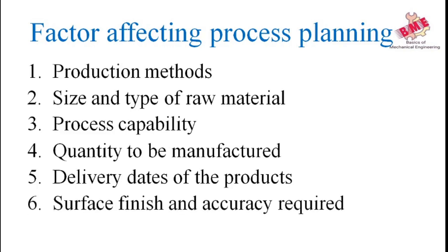The sixth factor is surface finish and accuracy required — the surface finish required varies with the type of tool, machine, and manufacturing process selected. For example, CNC machines give a better surface finish compared to manual lathe machines. We must select the proper machine for the surface finish required: if more surface finish is needed, a CNC machine can be selected; for normal surface finish, a lathe machine is sufficient. These are the factors affecting process planning.